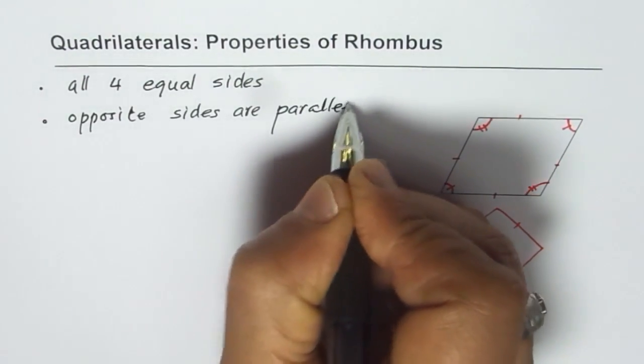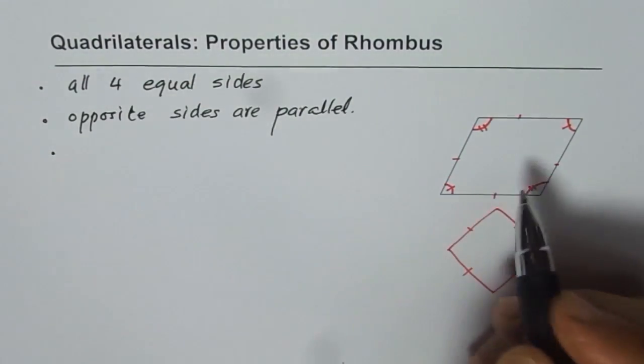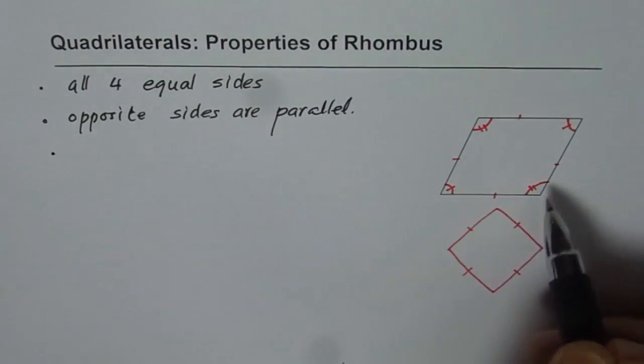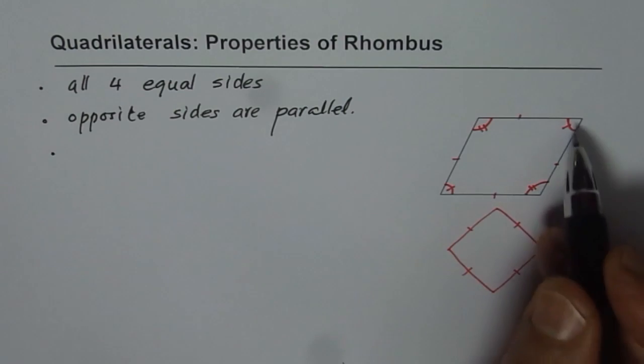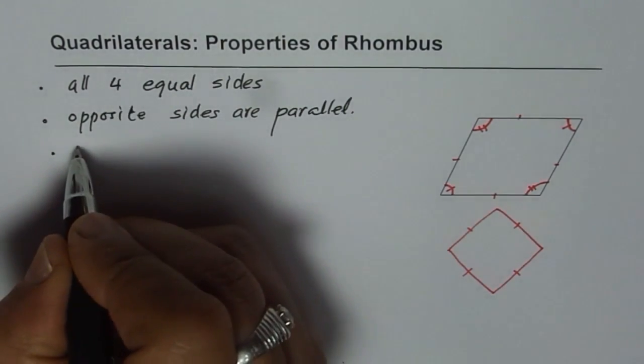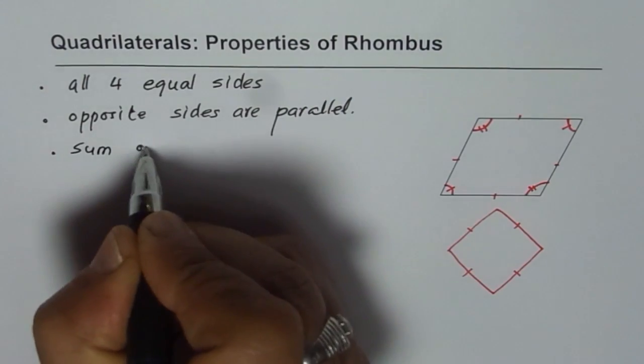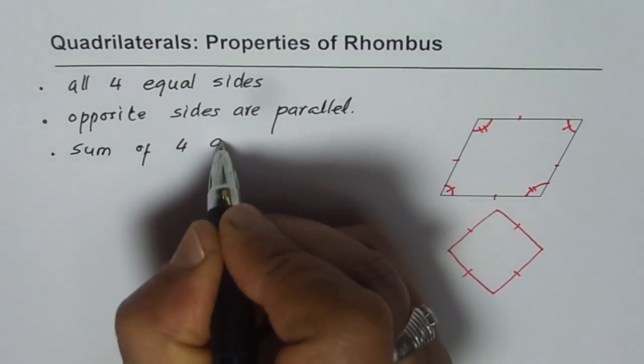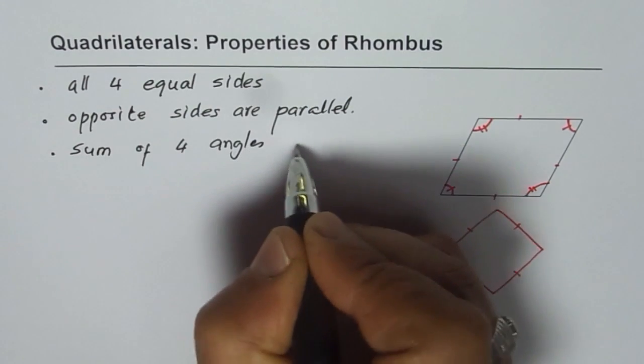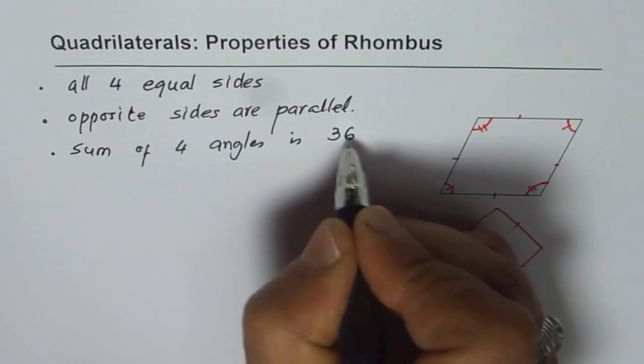How about angles? Well, since it is a quadrilateral, four-sided figure, sum of angles is 360 degrees. So sum of four angles is 360 degrees.